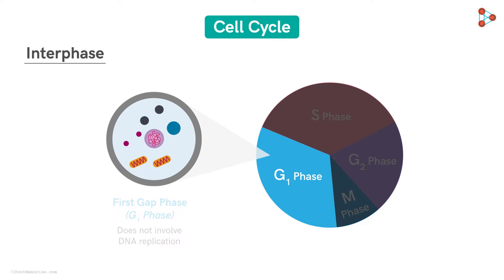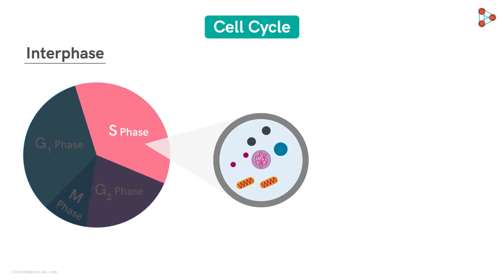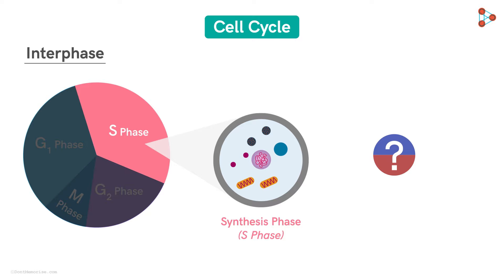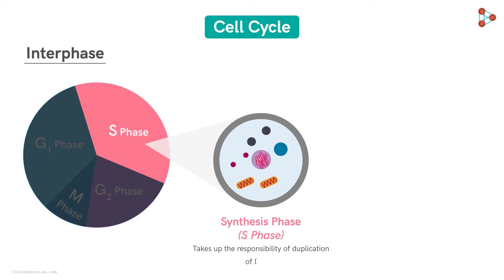Now let's move to the second stage of Interphase, which is the synthesis phase, abbreviated as S-Phase. As the name suggests, there will be synthesis of something. The most crucial part of each cell — the nucleus, along with the genetic material within — will get duplicated. So the S-Phase takes up the charge of DNA replication.